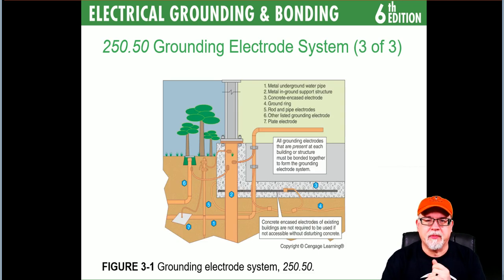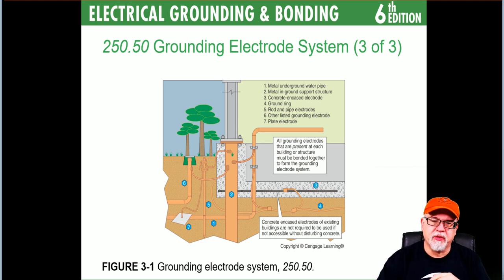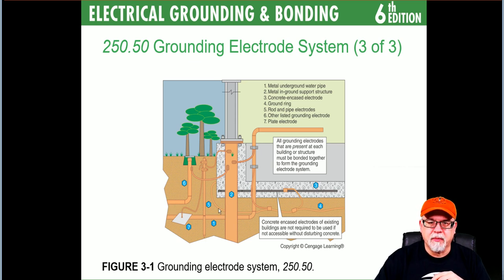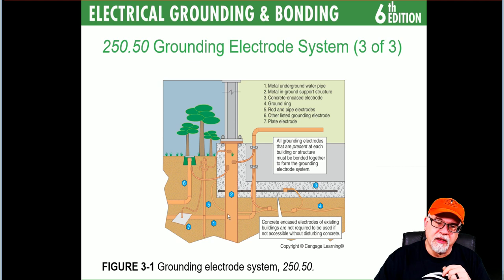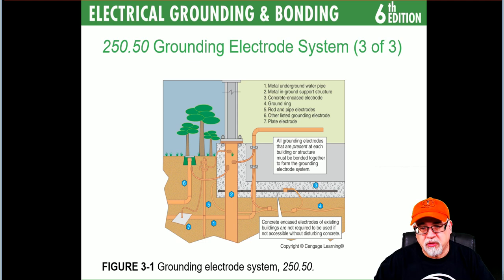Looking at the types A1 through A7 on screen: number one is the metal underground water pipe — 10 feet in contact with the earth. Number two is the in-ground support structure, which can be concrete encased or directly driven into the ground — basically the metal frame of the building driven down into the ground.